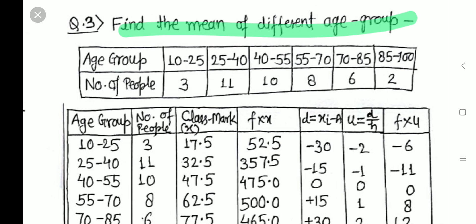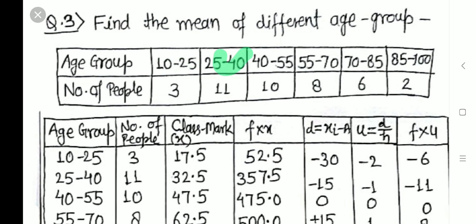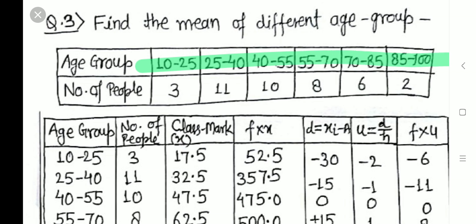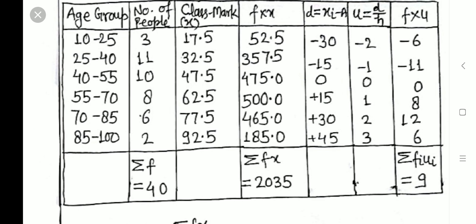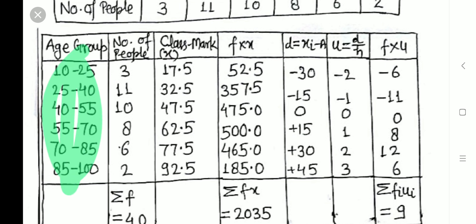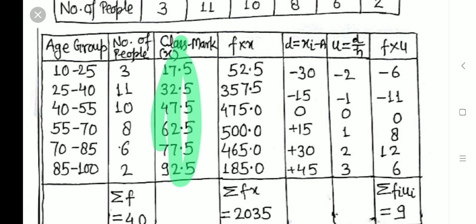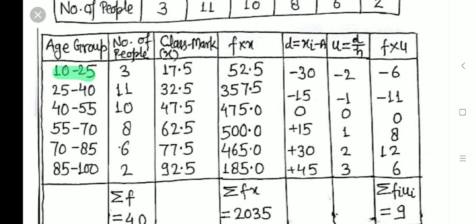For grouped data, find the mean of different age groups: 10–25, 25–40, 40–55, 55–70, 70–85, 85–100, with frequencies 3, 11, 10, 8, 6, 2 respectively. We make a table with columns: class interval, frequency, class mark, and f×x. The class mark is calculated by adding both boundary values and dividing by 2. For example: (10+25)/2 = 17.5, (25+40)/2 = 32.5, and so on.